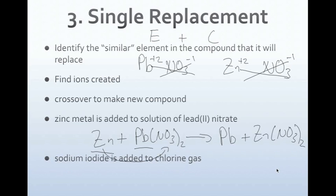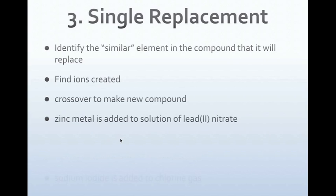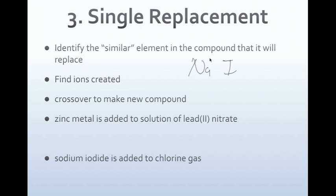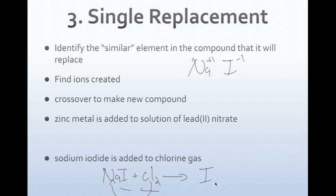Next example: sodium iodide is added to chlorine gas. Sodium is Na (plus 1), iodine is I (minus 1) — we crisscross to get NaI. Chlorine is Cl, and since it's a diatomic, we write Cl2. In the products, chlorine is a non-metal, so it switches with the non-metal iodine in the compound. Iodine goes by itself as I2. Sodium now bonds to chlorine: Na is plus 1, Cl is negative 1, so we crisscross to get NaCl.